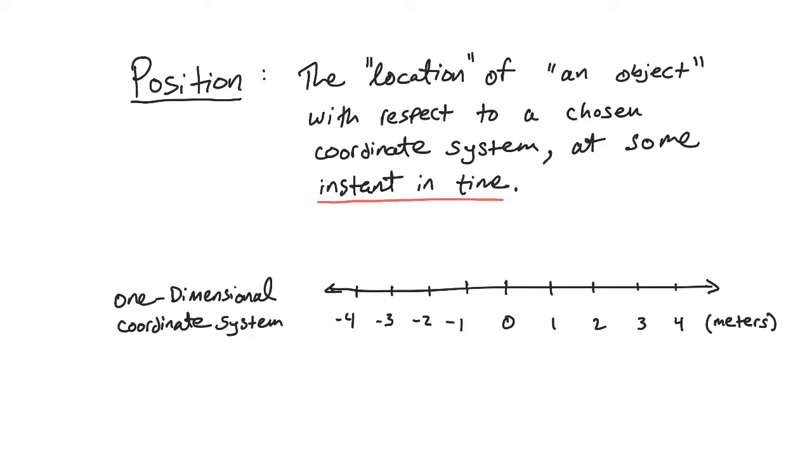If we could freeze time for an instant and say, hey, that's where it is in some coordinate system. You can see here the simplest type of coordinate system is just what's called the one-dimensional coordinate system.